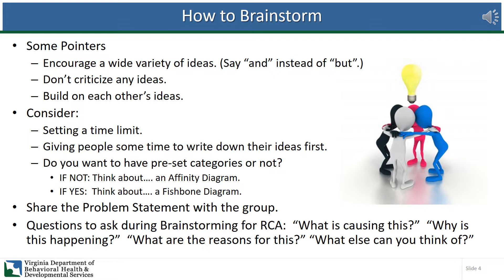You also want to think about whether you want to have preset categories or not — you can do it both ways. You will probably want to organize your ideas after people have shared them. If you don't have preset categories, an affinity diagram will be a good way to organize your ideas. If you do want preset categories, you should probably think about using a cause and effect diagram or fishbone diagram. Share the problem statement with the group and then ask them to start brainstorming with questions such as: What is causing this? Why is this happening? What are the reasons for this? What else can you think of?